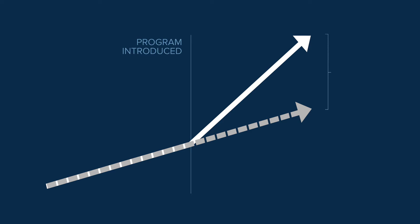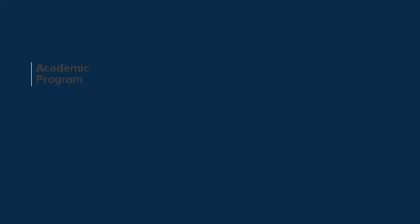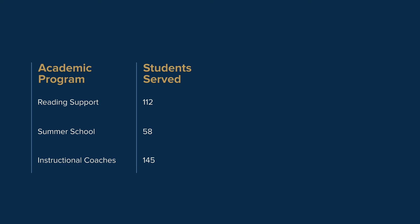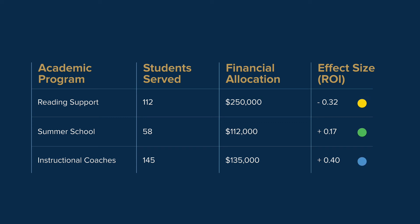Comparing where students are against where they would have been is the fundamental concept of academic return on investment. You can consider using this framework for each and every one of your programs, listing out your programs, the number of students that each program is serving, the financial investment you're making in those programs, and the academic return on investment of those programs.